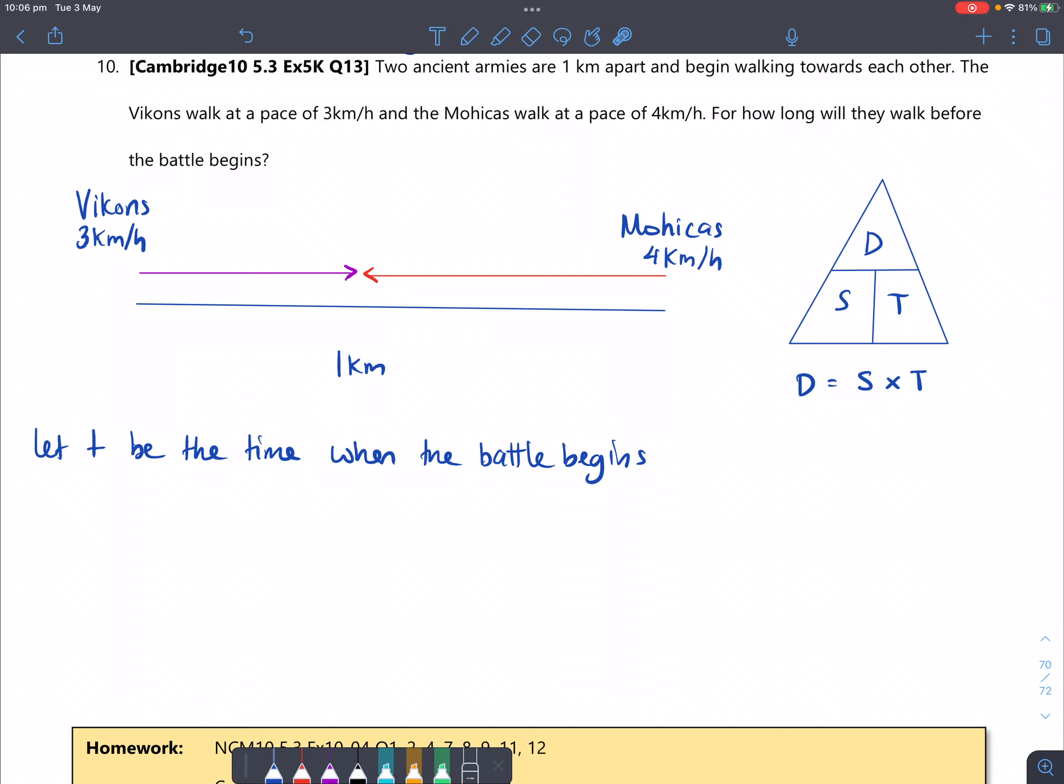So this has got a heavy reliance on distance. Because these are given as speed, you have to convert this to distance somehow. So using our DST triangle, distance, if you cover it, is speed times time. So we've got the speed, that's here. We don't have the time though, so we're just going to let the time be T.